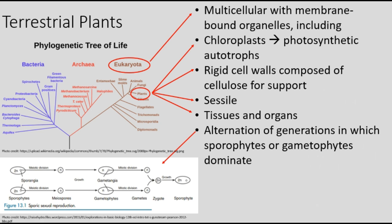All plants exhibit an alternation of generations in which sporophytes and gametophytes dominate. Plants have tissues and organs, but they are sessile. Some non-seed plants have motile sperm.